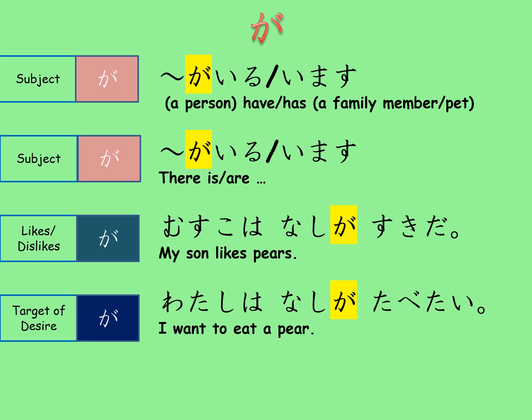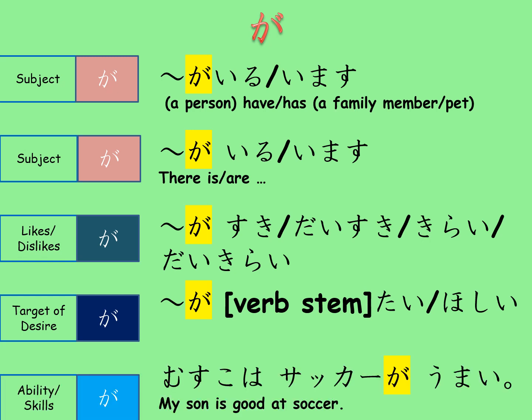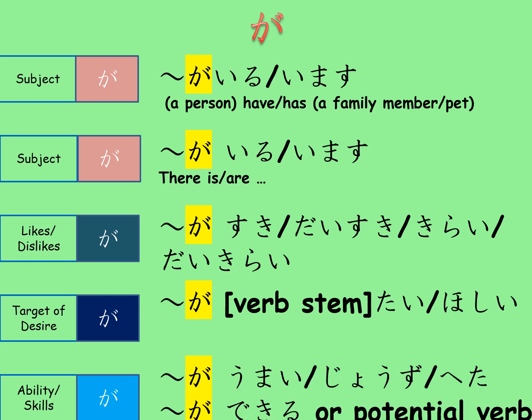There are other occasions when ga is preferred over wa. The next is when we talk about likes and dislikes or the target of desire. 'My son likes pears' is 'musuko wa nashi ga suki da.' 'I want to eat a pear' is 'watashi wa nashi ga tabetai.' So ga is used when we use words like suki, daisuki, kirai, daikirai, or something shitai or hoshii. The last occasion for now is when we talk about ability or skills. 'My son is good at soccer' is 'musuko wa sakka ga umai.' So ga is used with adjectives like umai, jouzu, heta, nigate, and verbs like dekiru or any verb that already has the meaning of 'can.'